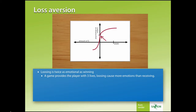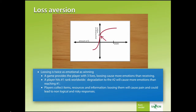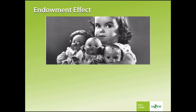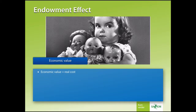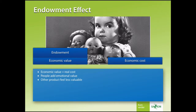If a game provides you with three lives, then losing one of them will cause an emotional response. If a player hits the first rank of the leaderboard worldwide, then degrading to second place will cause a more hefty emotional response than reaching the first one. Players usually collect items, resources, and information in the game, so losing them will cause pain and could lead to non-logical and risky responses. If you find a special magical weapon and spend hours searching for required materials to buy it, the moment you have that weapon it feels more valuable than purely its economic value — that's the endowment effect.